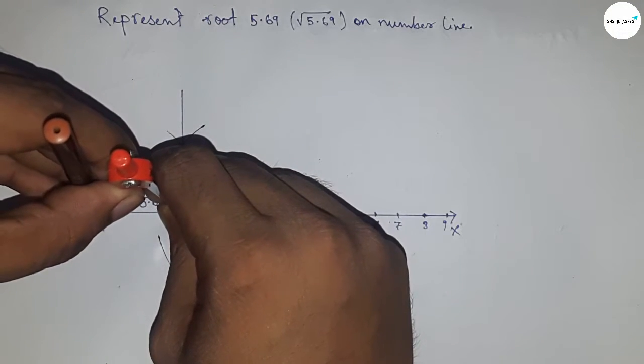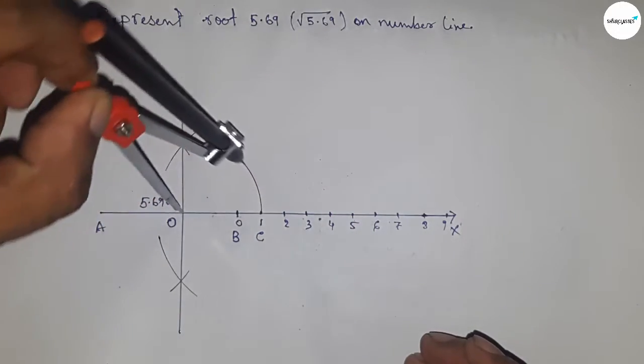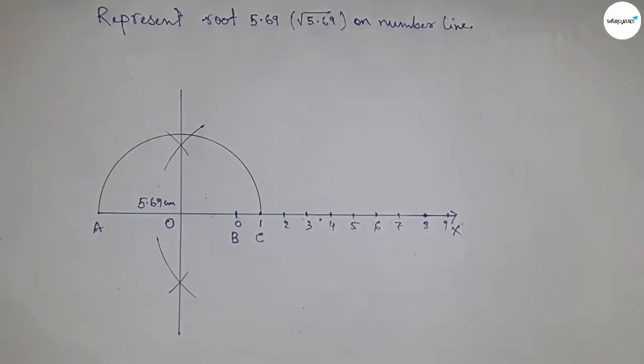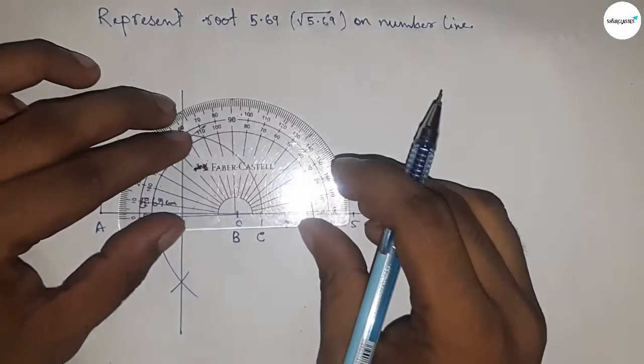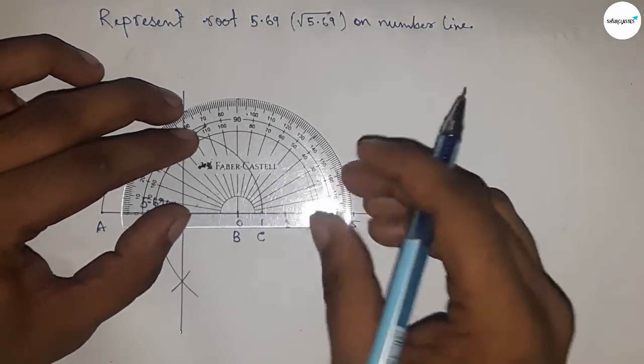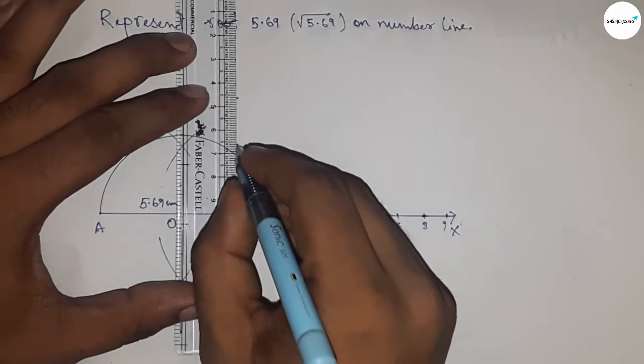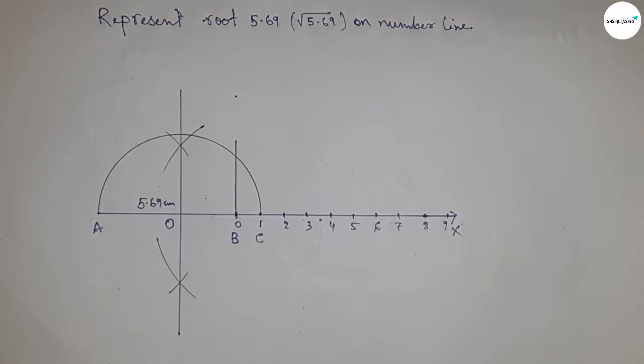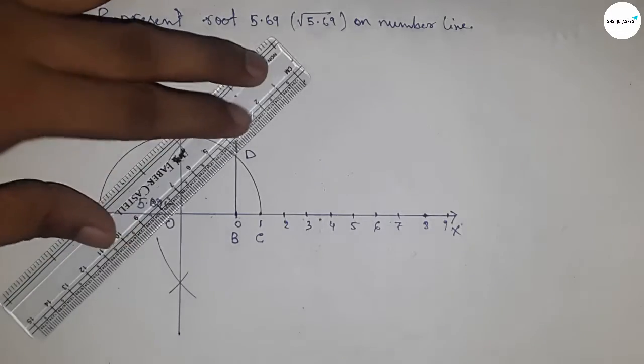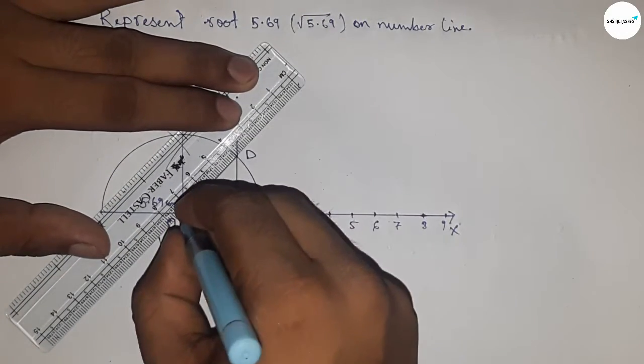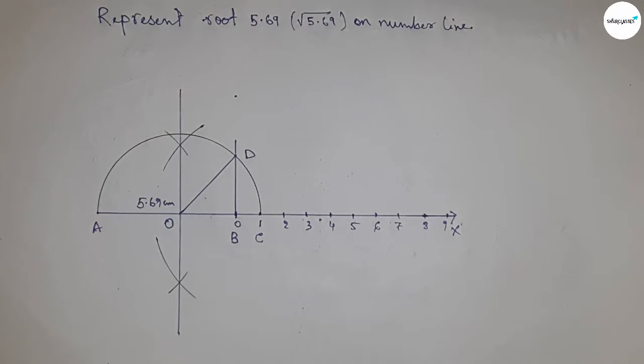Next, drawing a 90 degree angle on the point B by using protector. So joining this and which meet at a point D.